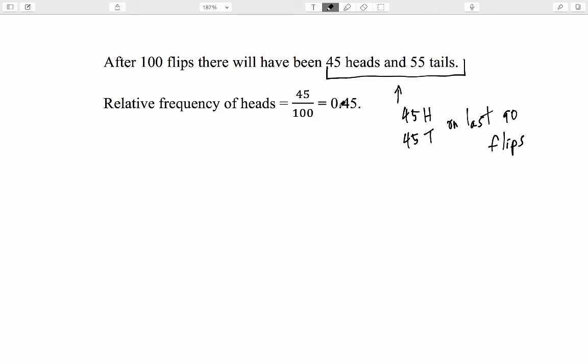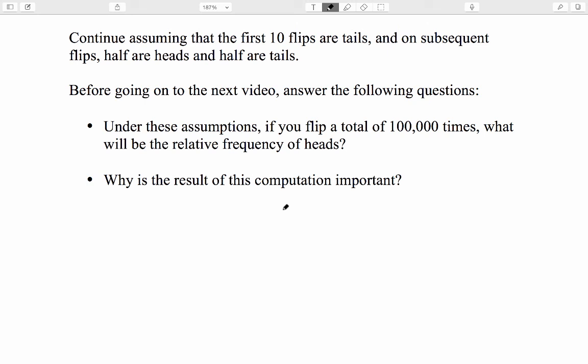This is the key point. The relative frequency of heads isn't climbing all the way to exactly 50%, but it is getting closer as we flip more. Let's continue assuming that the first 10 flips are tails, and on subsequent flips, exactly half are heads and exactly half are tails. Before going on to the next video, answer the following questions. Under these assumptions, if you flip a total of 100,000 times, what will be the relative frequency of heads? And why is the result of this computation important?